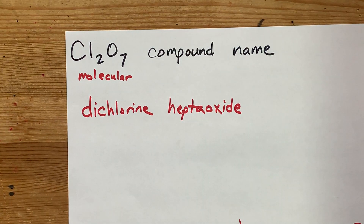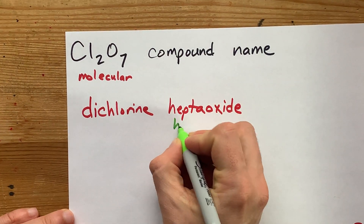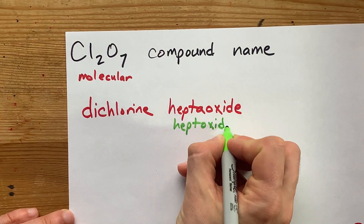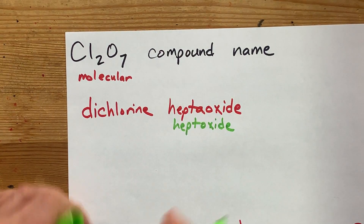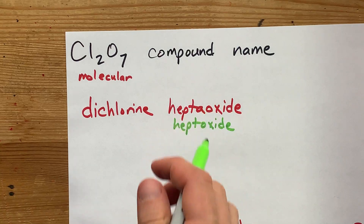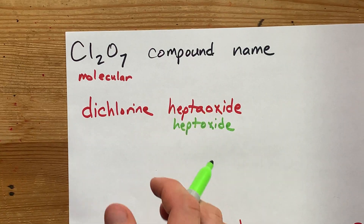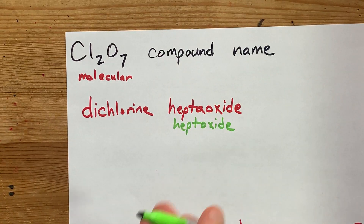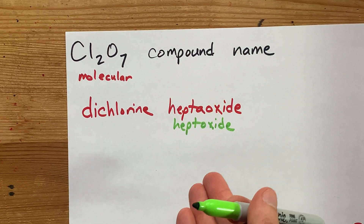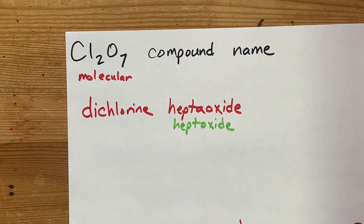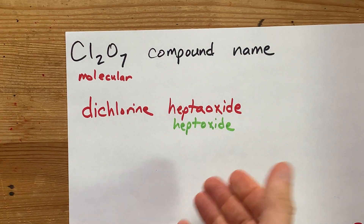Some teachers will tell you to abbreviate that to just 'heptoxide'. I believe the IUPAC naming allows for both. I prefer the first one, but I'm not the one giving you the marks, so do whatever your teacher tells you to.